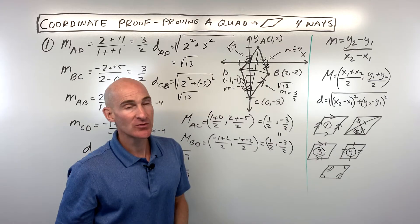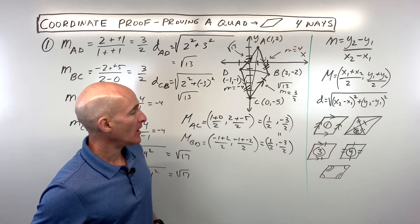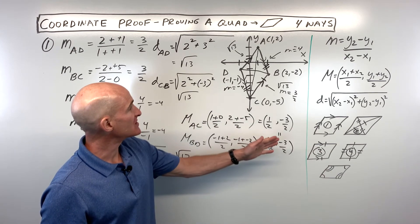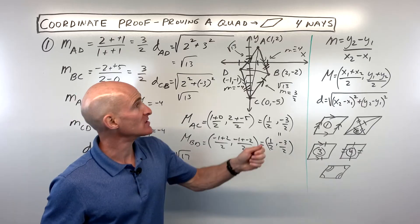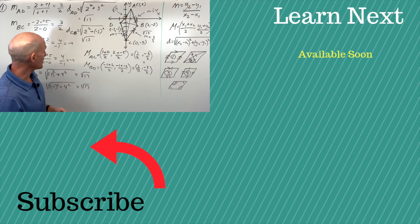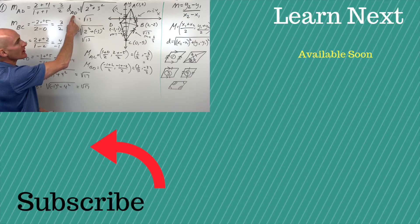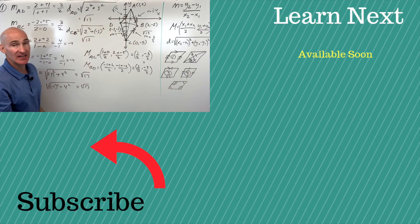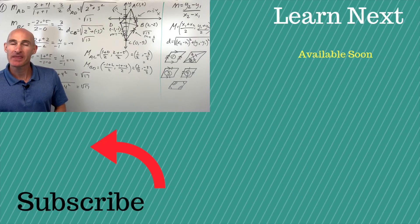Method five involves angle measures and is a little more challenging, so we'll leave that one for now. These are the ways you would approach coordinate proofs using the midpoint formula, the slope formula, and the distance formula. Be very organized in how you notate everything — for example, using a subscript like d_AD so you know it's the distance of AD. I hope that helps you understand coordinate proofs a little better. Great job, I'll see you in the next video.